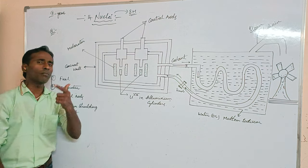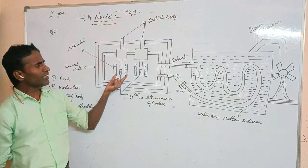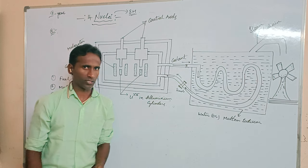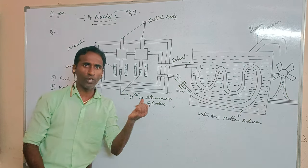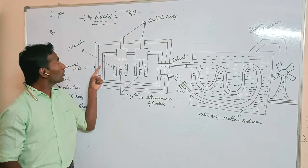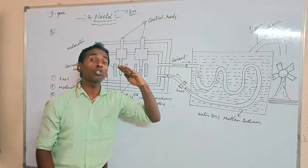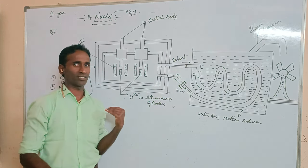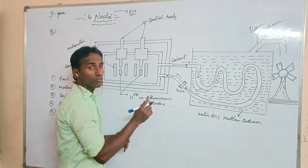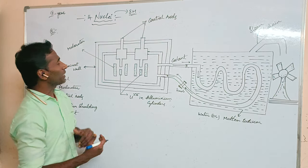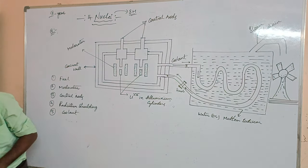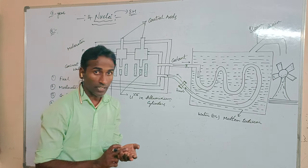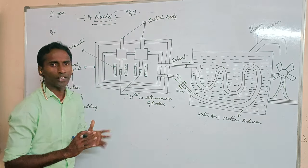The second feature is the moderator. When the fuel rods get heated, they release fast-moving neutrons. The moderator slows down those fast-moving neutrons. The best examples for the moderator are heavy water, graphite, and hydrocarbon. These are the best examples for moderators.